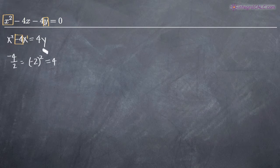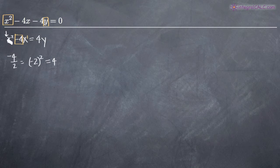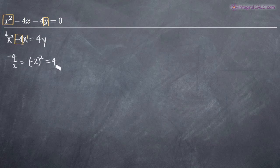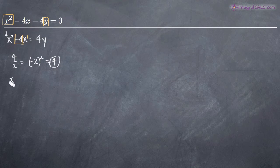Remember too that when completing the square, if you have a coefficient on your x squared term, you need to divide both sides of the equation by that coefficient, because it must be 1 before you can complete the square. In this case it already is, so we can go ahead and take that coefficient on the first degree term. We get 4, which is what we'll add to both sides.